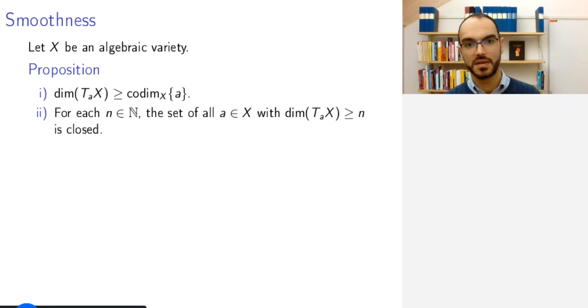One other observation is that if we fix a natural number N and we look at the set of all a in X, where the dimension of T_a is at least N, this set is closed. The reason for this, again, the idea is to reduce to the affine case and so on. And then you see that from the original definition or the computational definition of the tangent space,